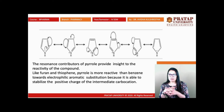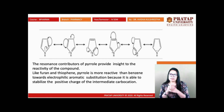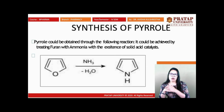Like furan and thiophene, pyrrole is more reactive than benzene towards electrophilic aromatic substitution because it is able to stabilize the positive charge of the intermediate carbocation. Now, for synthesis: pyrrole can be obtained from furan. The reaction of furan with ammonia — furan amination — followed by removal of a water molecule gives pyrrole. This reaction is fast in the presence of solid acids.